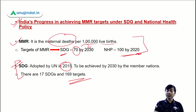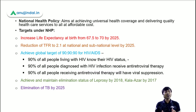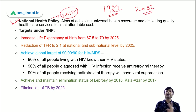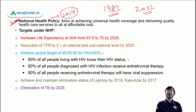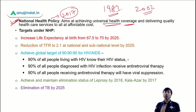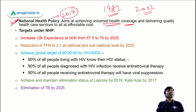In total, till now we have three national health policies. This national health policy was implemented in the year 2017. Before this we have two — one in 1983 and other in 2002. The national health policy aims at achieving universal health coverage, and providing affordable quality health services to all.